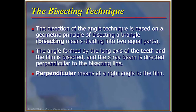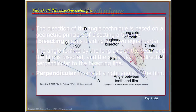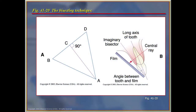The bisecting angle technique is based on a geometric principle of bisecting a triangle — bisecting means dividing into two equal parts. The angle formed by the long axis of the tooth and the film is bisected, and the x-ray beam is directed perpendicular to that bisecting line. Perpendicular means at a right angle to the film.